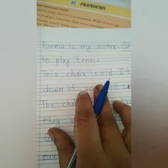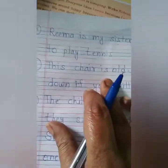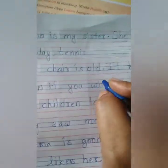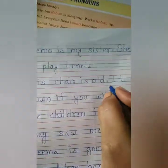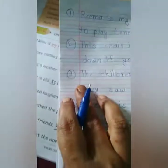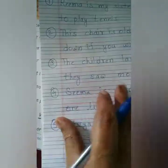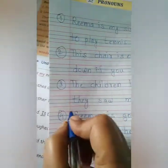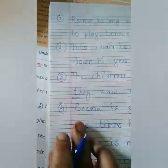This chair is old. We are talking about a chair. It broke down if you sit on it. So you have to underline 'it'. Next: The children laughed when they saw the monkey. You have to underline 'they'.